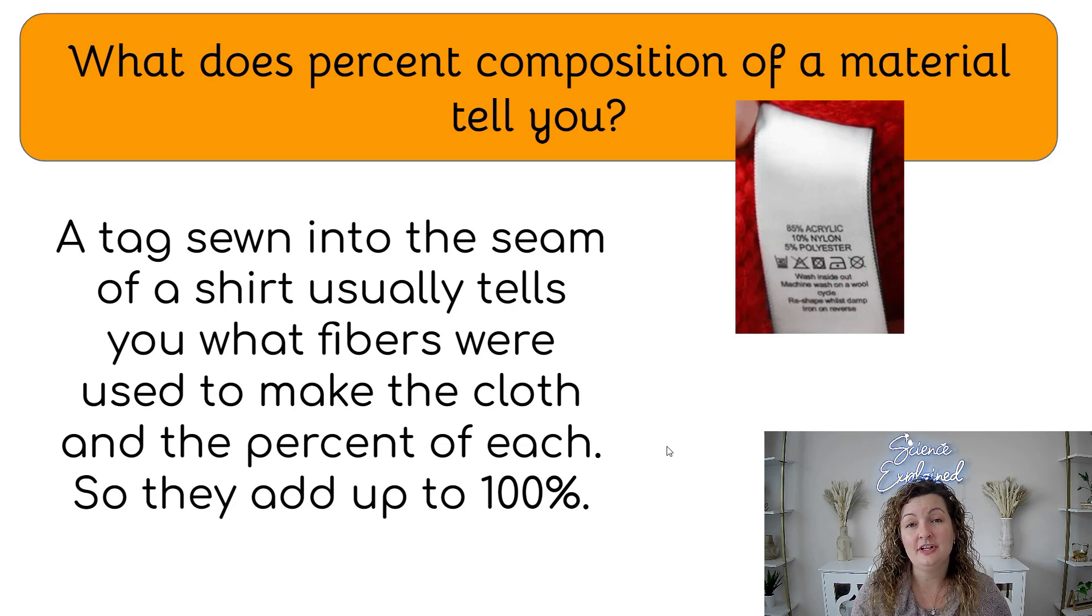So what does a percent composition of the material tell you when you look at a tag like say on your shirt? If you read it, it will actually tell you the percentage of each one of the fibers that are in your shirt. So this one says 85% acrylic, 10% nylon, and 5% polyester. Those all combine to give you 100% of the fibers that are in your shirt. And then you know how much each one appears in your shirt for the fabric.